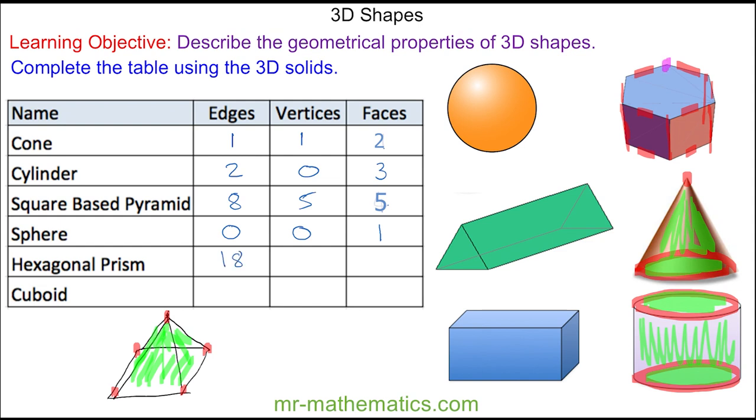These 18 edges create 12 vertices: six on the top and six on the bottom face. And you can see we have six vertical faces, plus the two horizontal faces which are hexagons on the top and bottom. So in total we have eight faces.